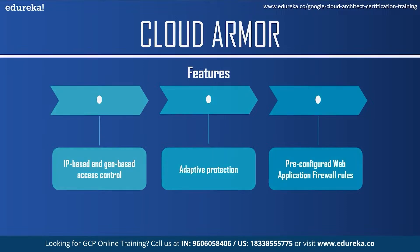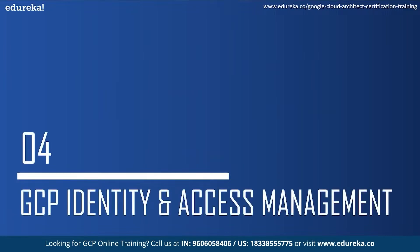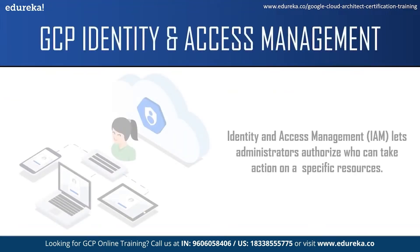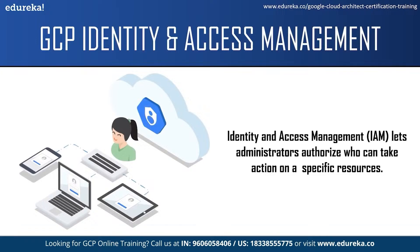So this was about Cloud Armor. Let us move on to the next topic and talk about Identity and Access Management. IAM lets administrators authorize who can take action on specific resources, giving you full control and visibility to manage your Google Cloud resources centrally. IAM provides tools to manage resource permissions with minimum confusion and high automation. You can map job functions within your company to groups and roles so that users get access only to what they need to get the job done, and admins can easily grant default permissions to entire groups of users.